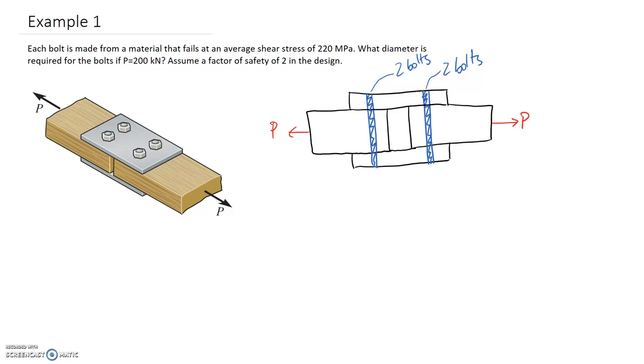Each bolt is made from a material that fails at an average shear stress of 220 MPa. What diameter is required for the bolts if P is equal to 200 kN? We're going to assume a factor of safety of 2 in the design.